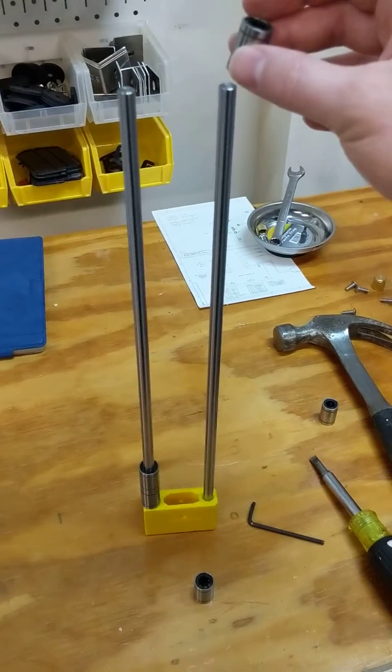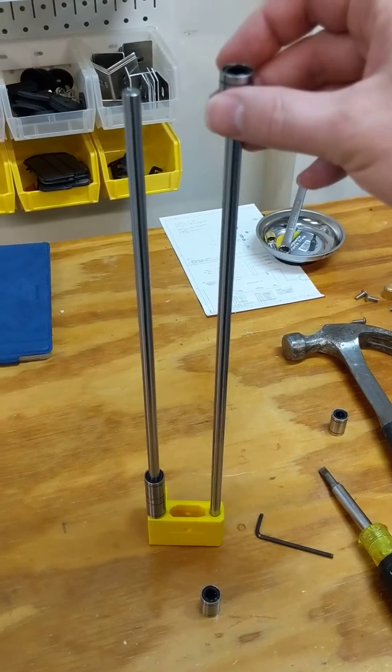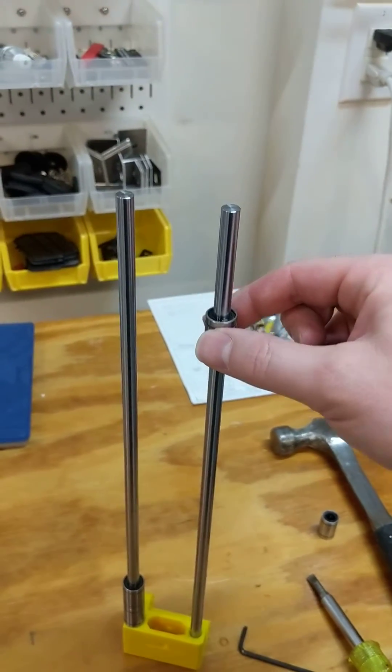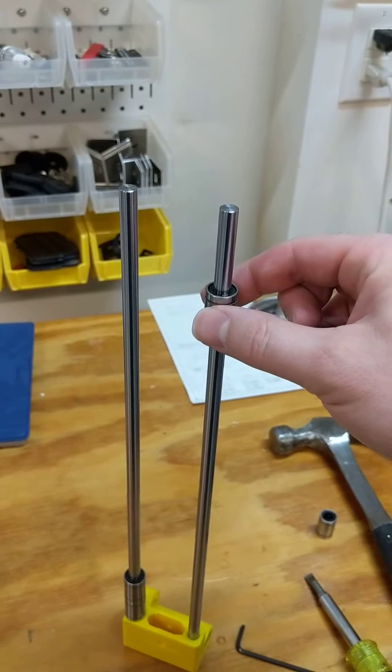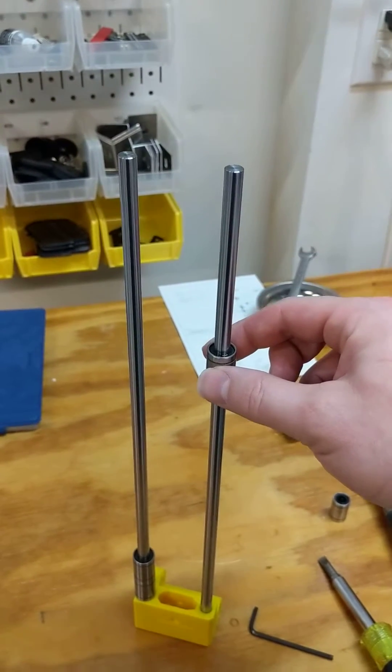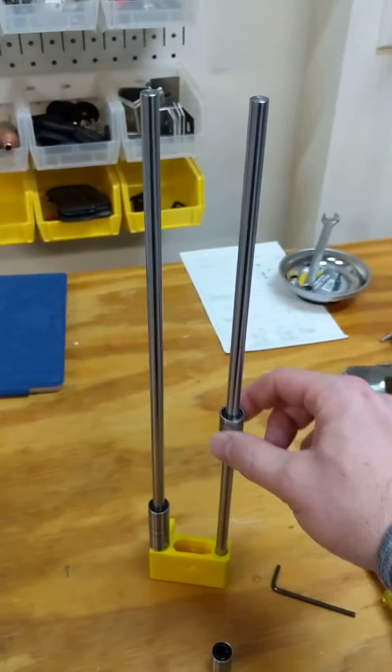But if you put this just on here on this rod, you can kind of see and feel it's a little crunchy here as you slide it up and down. You can see the kind of the jerkiness of the movement, and if you get it far enough down, it'll kind of fall on its own.